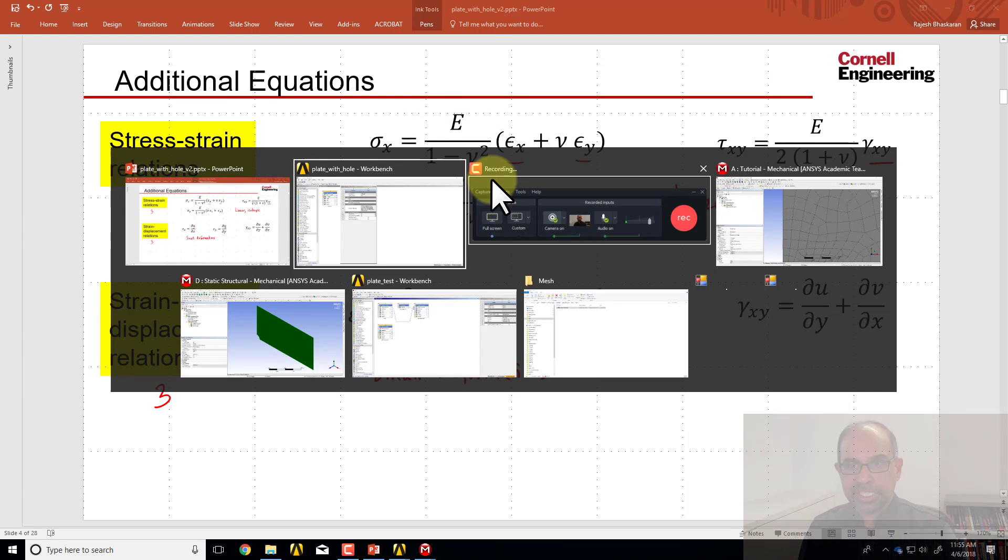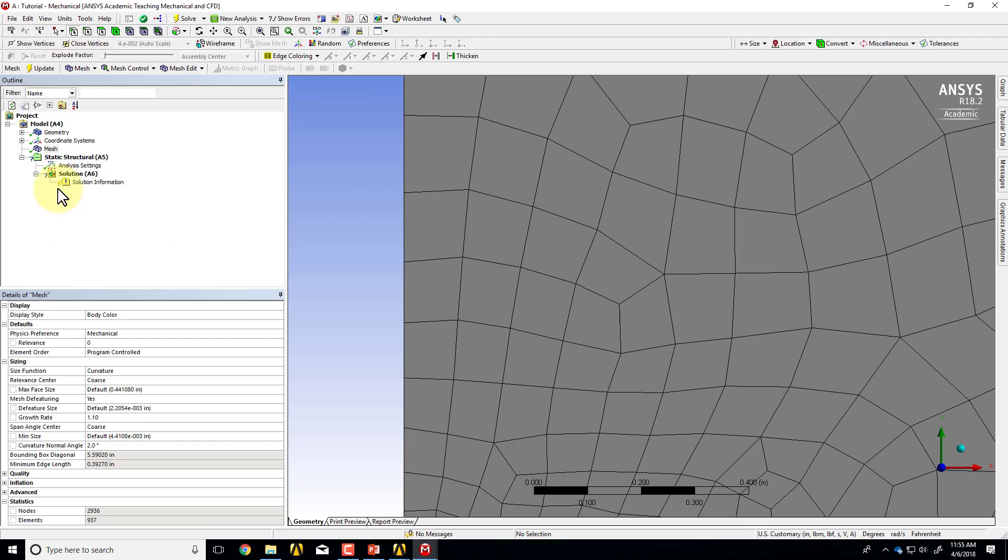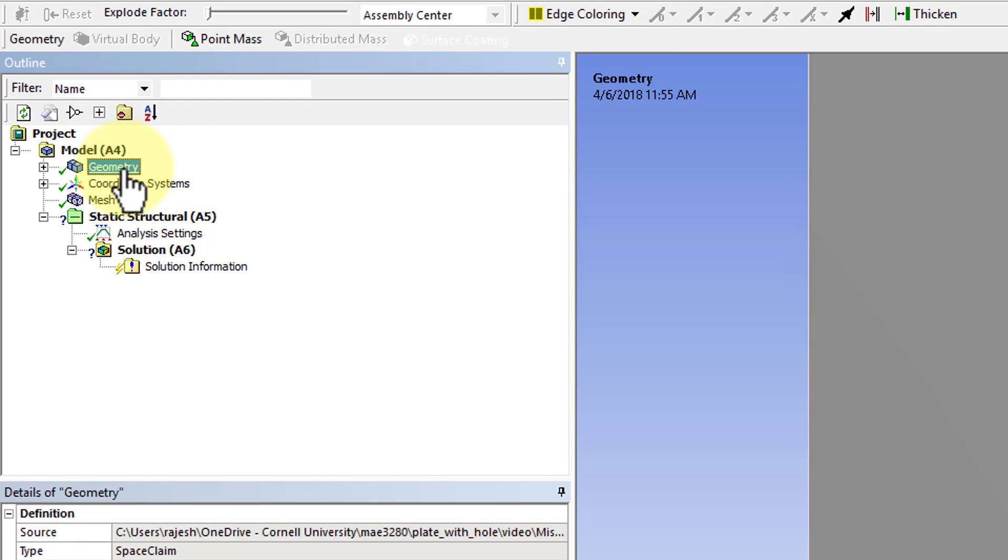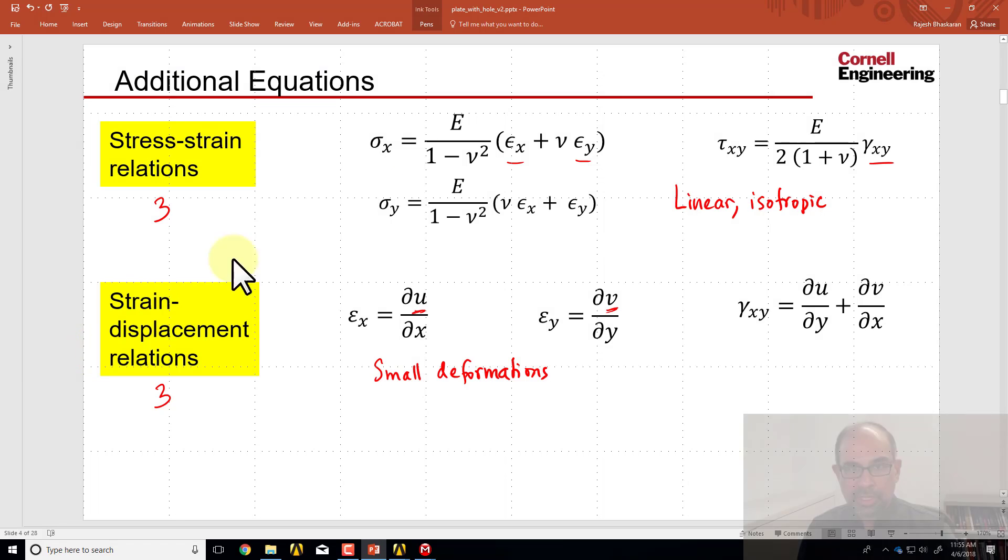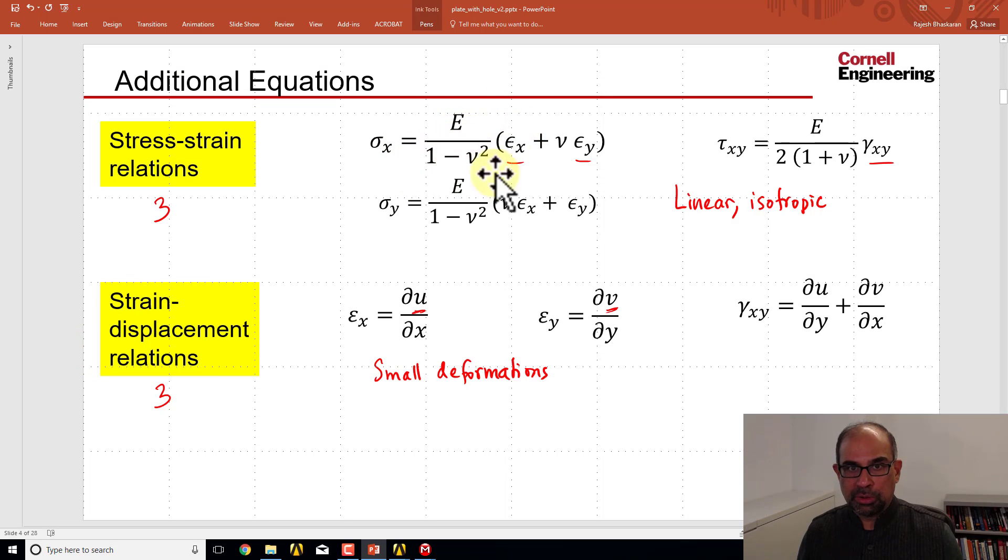And we can see that if I go to the mechanical window and if I highlight geometry, I see the 2D behavior is set to plane stress. And that's the plane stress version of Hooke's law. So that's turned on.